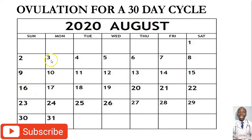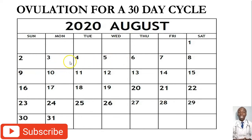Assuming you have a Saturday cycle and you spent 4 days in your period, let's say you started your periods on 2nd. Still, the same method applies. You have to begin counting from the first day you saw your periods.